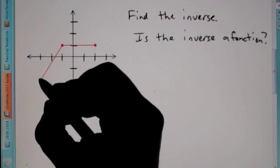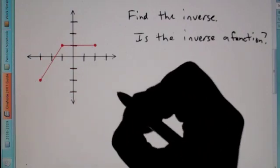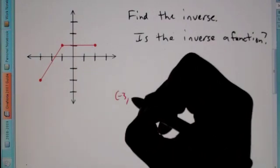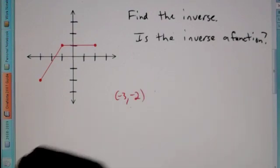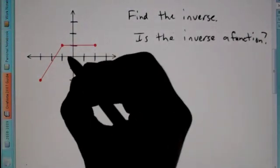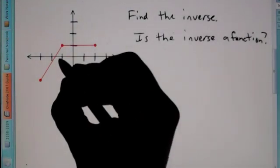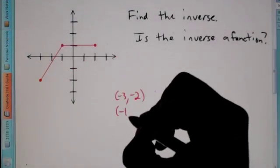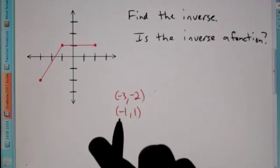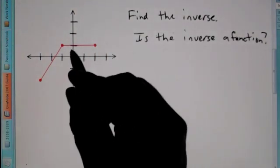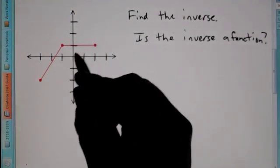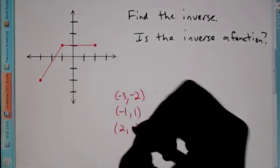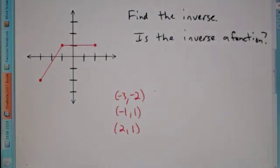The coordinate for this first point is negative 3, negative 2. The next one is negative 1, 1. And lastly, this coordinate is 2, 1.